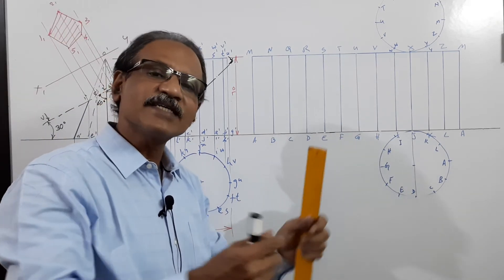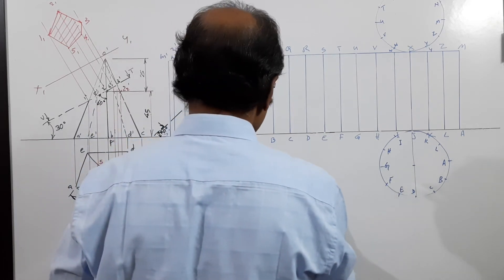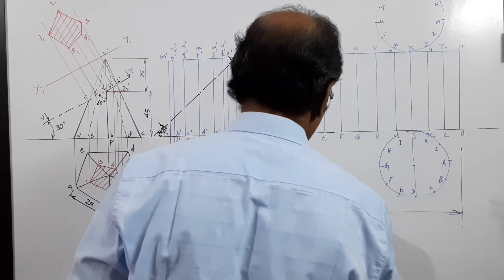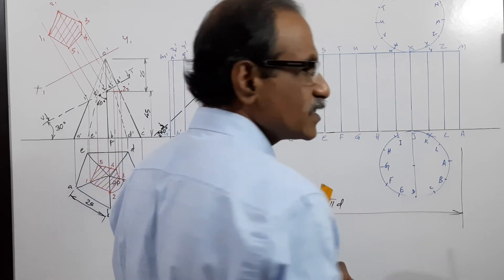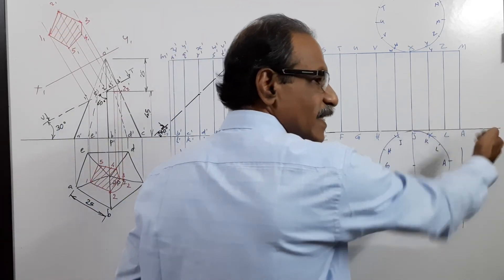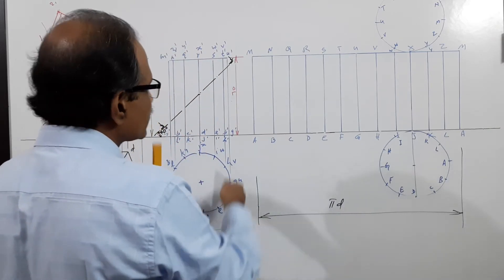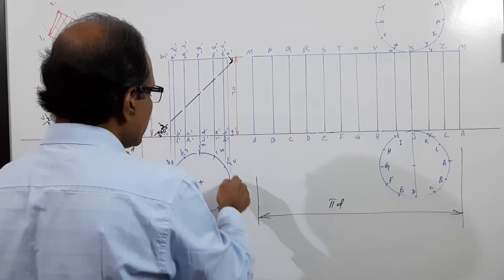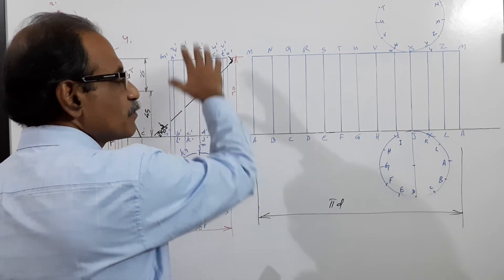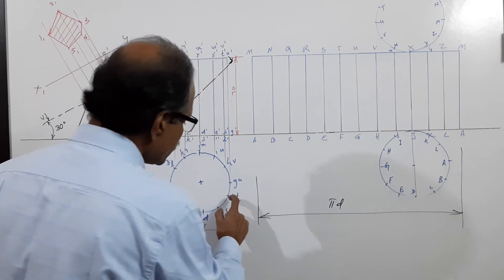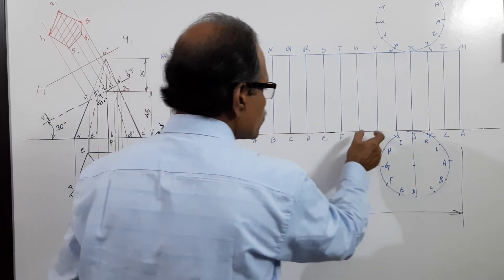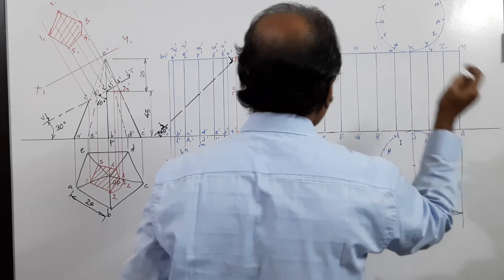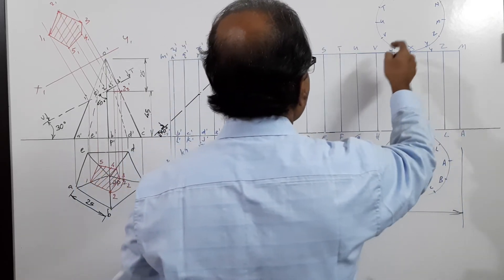The development of the cylinder is a rectangle. The length of this rectangle is pi×D. The easiest way: draw a straight line without limiting the length. Divide the circle into 12 equal parts and mark all the points A, B, C, D, E, F, G, H, I, J, K, L at the bottom, and M, N, Q, R, S, T, U, V, W, X, Y, Z on the top. I have marked the points in the plan and elevation. Now take this chord and very carefully place it 12 times — wherever it ends, close it and mark A, B, C, D, E, F, G, H, I, J, K, L, A and M, N, Q, R, S, T, U, V, W, X, Y, Z, M.